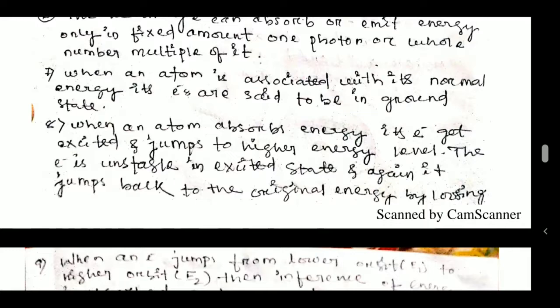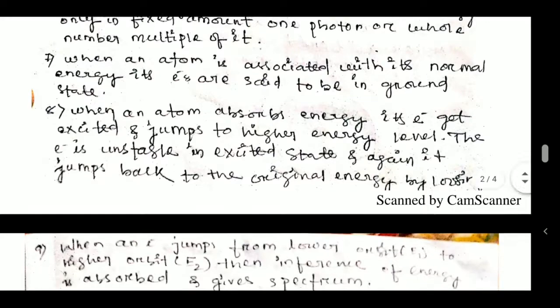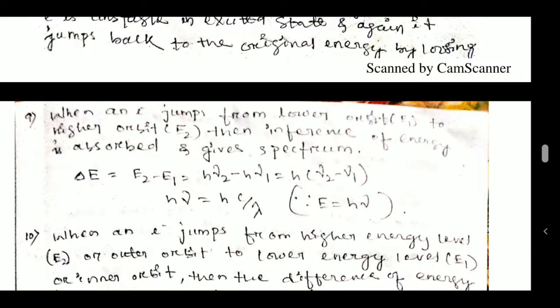When an electron jumps from lower orbit E₁ to higher orbit E₂, a difference of energy is absorbed and produces a spectrum. The electron accepts a photon in order to jump from the lower to the higher orbit. The formula is: ΔE = E₂ − E₁ = hν₂ − hν₁ = h(ν₂ − ν₁) = hc/λ, where h is Planck's constant.